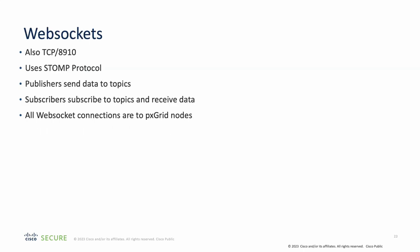WebSockets are another way to interface with PXGrid. Unlike REST API calls, WebSockets establish a persistent connection to receive real-time information from ISE. WebSockets use a protocol called STOMP. WebSocket connections will always go to the PXGrid nodes — if you need to receive session data, your WebSocket connection will be to the PXGrid nodes, not the MnT node.